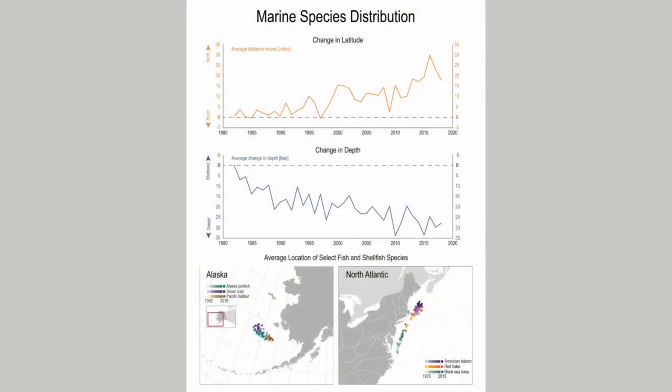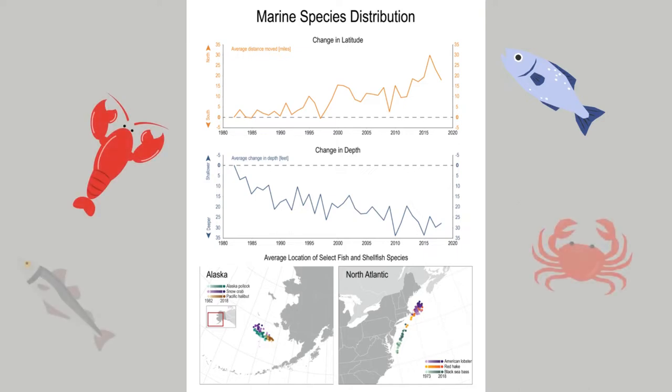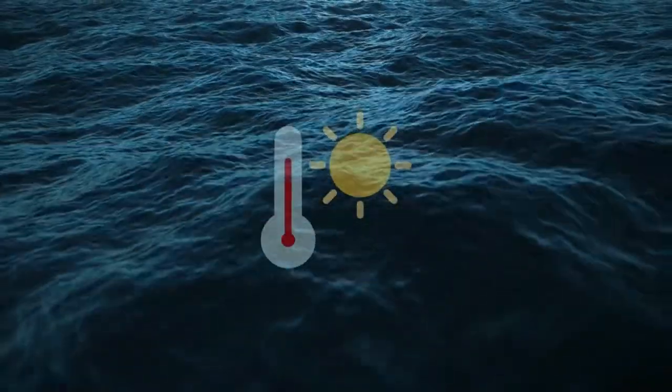The Marine Species Distribution Indicator examines changes in the location of fish, shellfish, and other marine species along the U.S. coast.